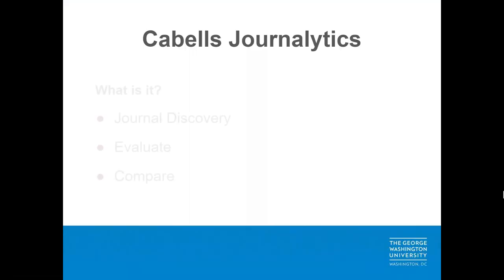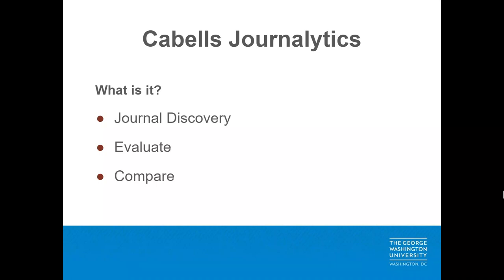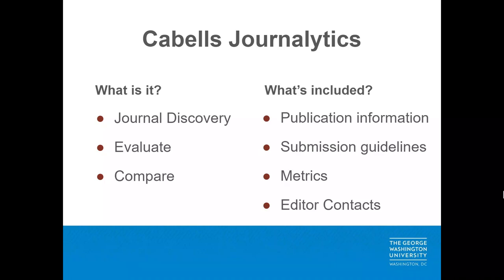Journalytics is a tool that researchers and authors can use to discover journals in which to publish their manuscripts. The information provided in Journalytics will help you evaluate and compare journals to help you decide which journal is appropriate for your research. You'll find publication information including how frequently the journal is published, the disciplines covered, the intended audience, and a brief description of the journal.